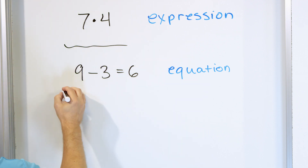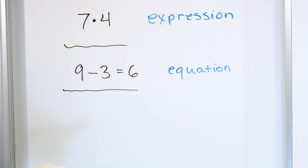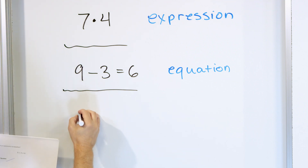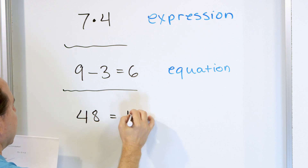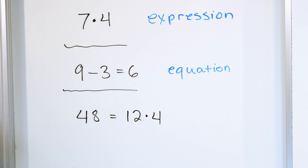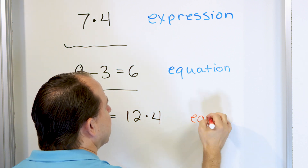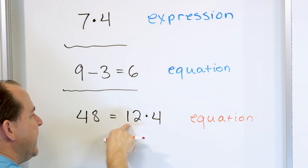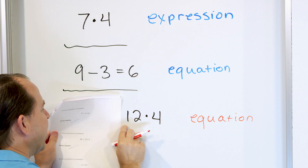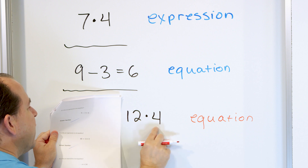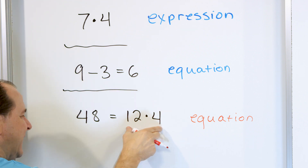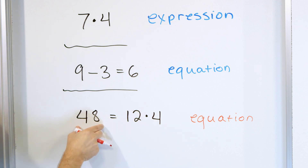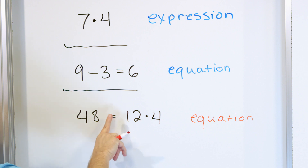If there's no equal sign, then there's nothing equal to anything else — it's just called an expression. Now, what about 48 is equal to 12 times 4? Is this an equation or an expression? There is an equal sign, so it's an equation. You can double check: if I cover the equal sign up, this is an expression by itself — it's just a calculation. 12 times 4 calculates to be 48, so the right-hand side computes to 48 and the left-hand side is 48. Because they're the same, they're joined by an equal sign because they're equivalent. That is what we call an equation.